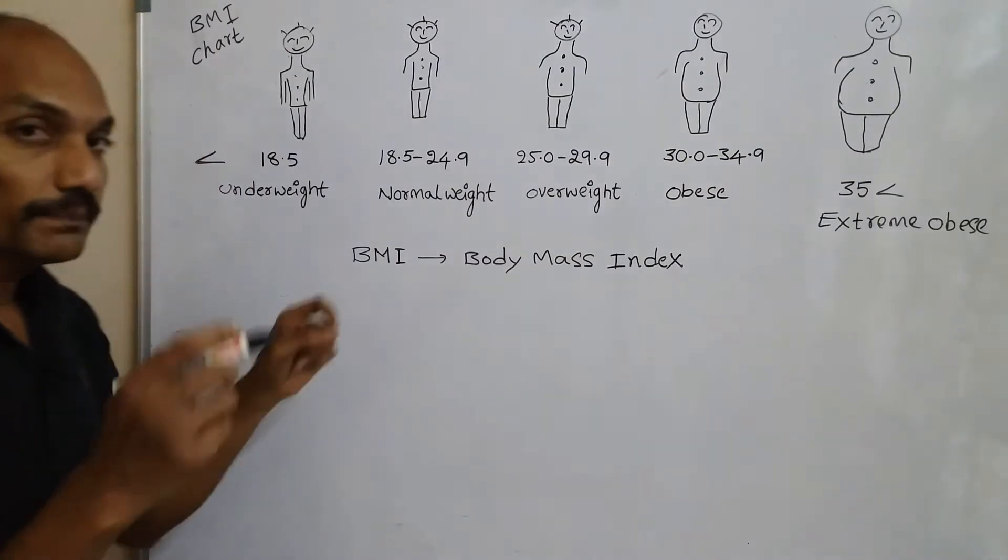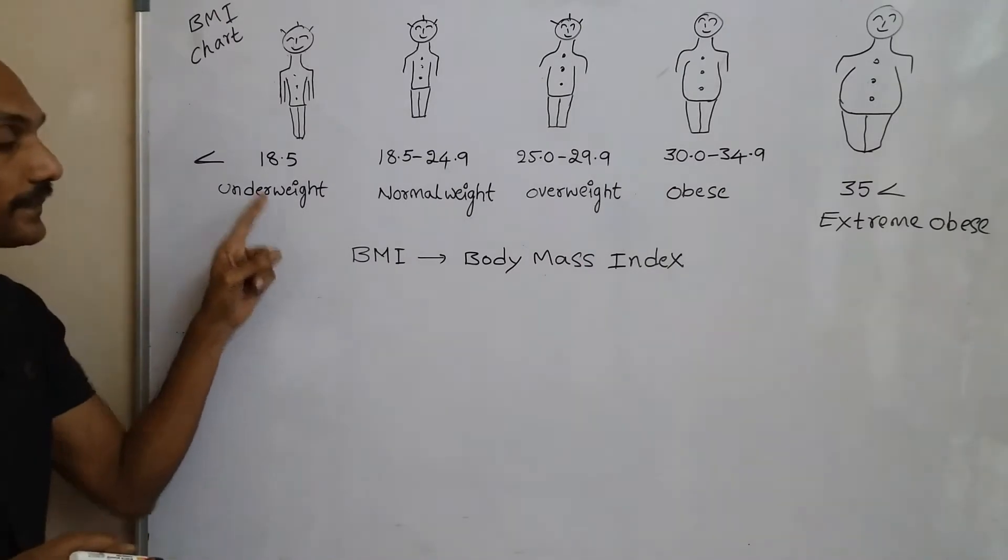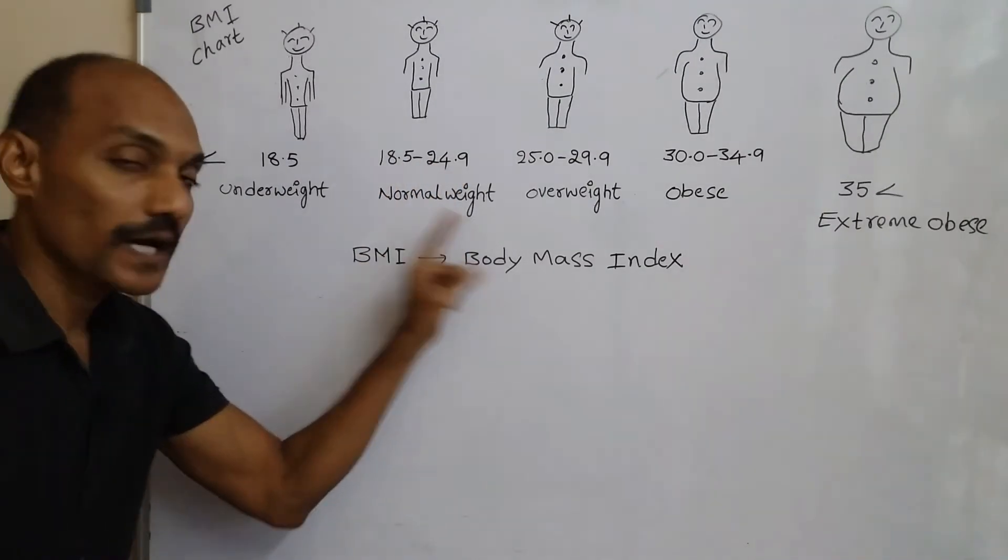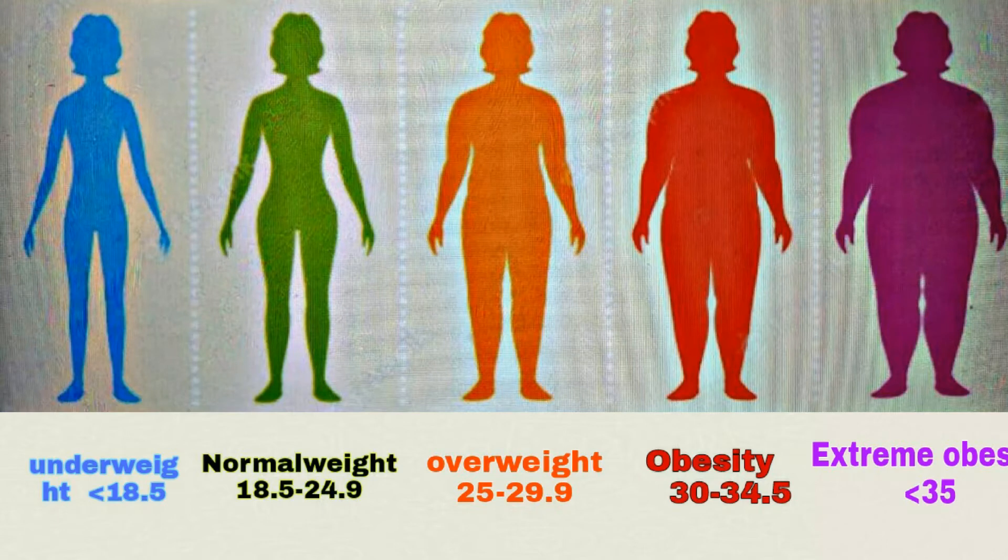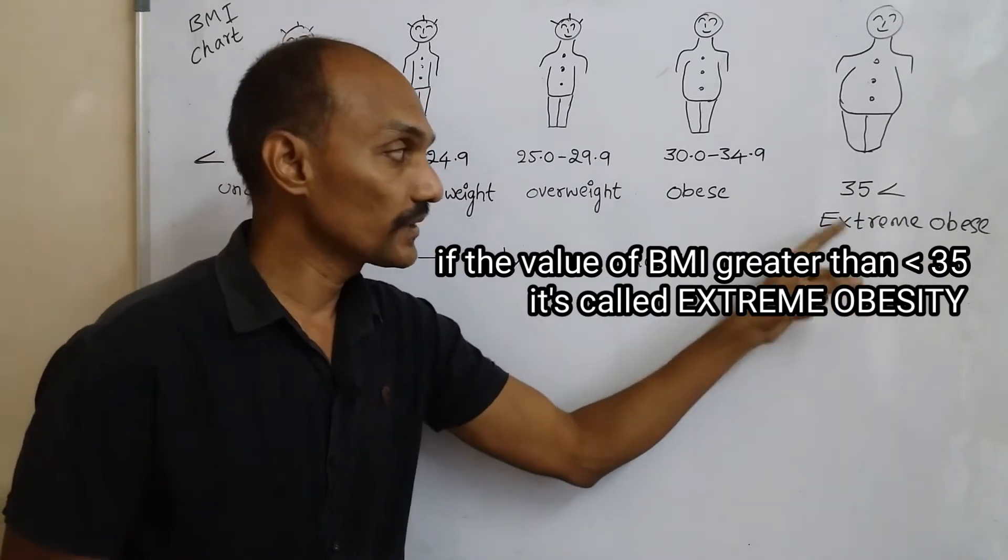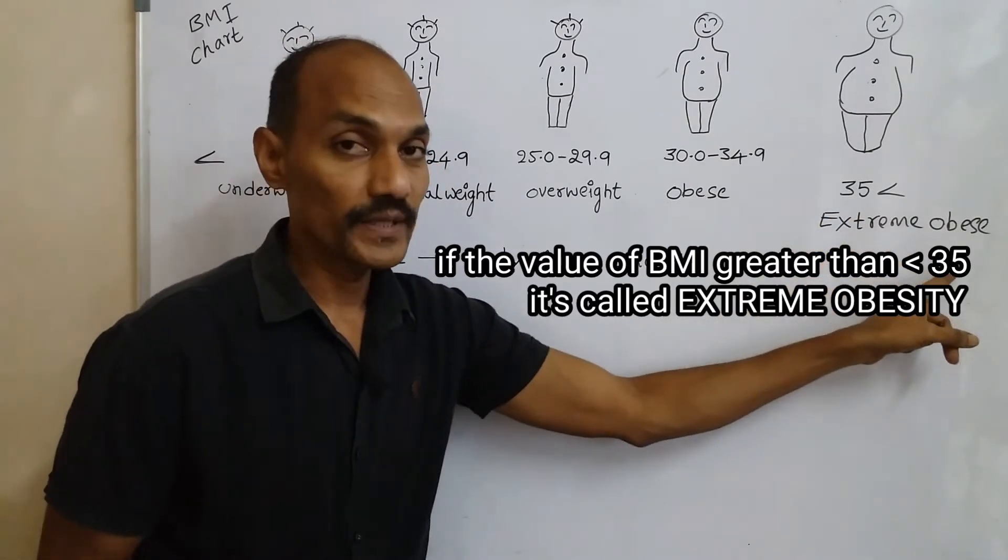Let's see the body mass index chart. If the BMI is less than 18.5, it's called underweight. If the BMI is between 18.5 to 24.9, it's called normal weight. If the BMI is between 25.0 to 29.9, it's called overweight. If the BMI is between 30.0 to 34.9, it's called obesity. And if the person's BMI is over 35, it's called extreme obesity.